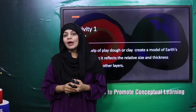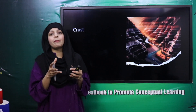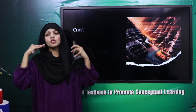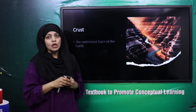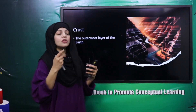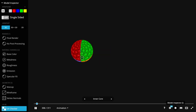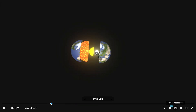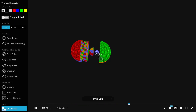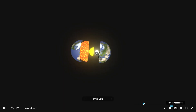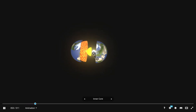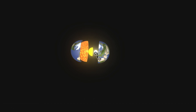I hope you have enjoyed the activity. Now let's study about each layer in detail. First, at the top of the earth, we have the crust layer. We will move forward towards the 3D model. The crust is basically the outermost layer of the earth. As you have already seen the 3D model, number one is the crust - this is the crust.